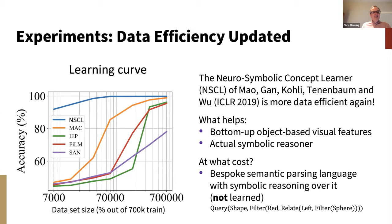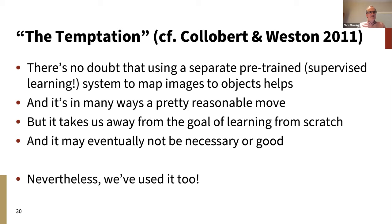This is not some kind of generic learner that can be applied to different problems without changes. This reminded me of what Collobert and Weston in their famous 2011 paper referred to as the temptation — there's no doubt that using a separate pre-trained supervised learning system to map images to objects helps a lot. In many ways it's a pretty reasonable move to modularize that away — to say there's a first stage of concept and object learning, and then build on top of that. But it takes us away from the goal of building large cognitive systems that can learn about the world from scratch.